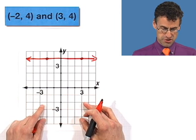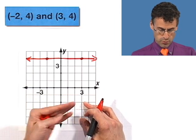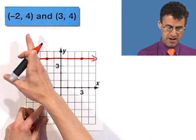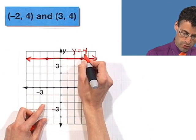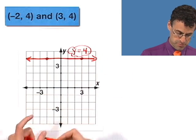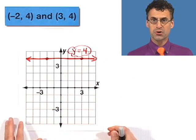And so, what do we know? The equation of the line is just going to be what the y value equals. The y value they have in common, which of course is four. So, the equation for this is y equals four. Y equals four is the equation for this particular horizontal line. Cool.